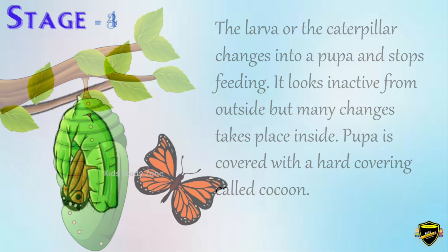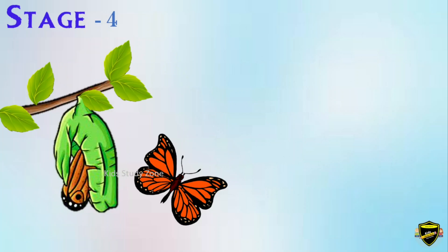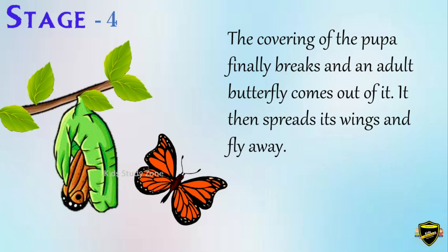Stage 4: the covering of the pupa finally breaks and an adult butterfly comes out of it. It then spreads its wings and flies away.